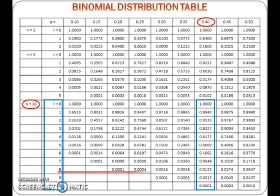The first probability we want to find is the probability of x greater than or equals to 8. The table gives the probability of x greater than or equals to r. Thus, the probability of x greater than or equals to 8 can be obtained straight away from the table.